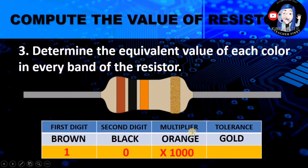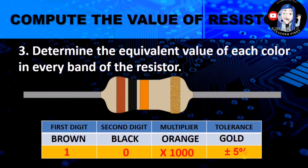If you remember, orange in the first and second digit has a value of 3. So when it comes to the multiplier, it has three zeros. And the tolerance, which is gold, has a value of plus/minus 5% or positive/negative 5%.